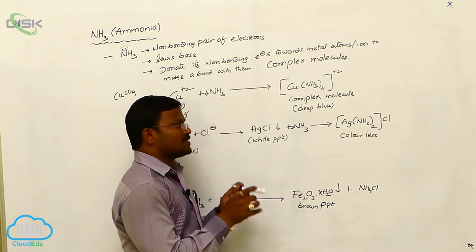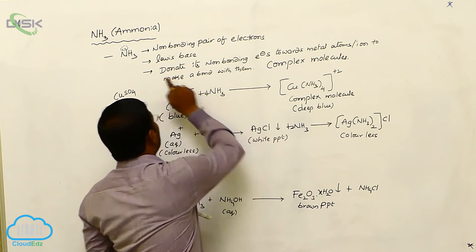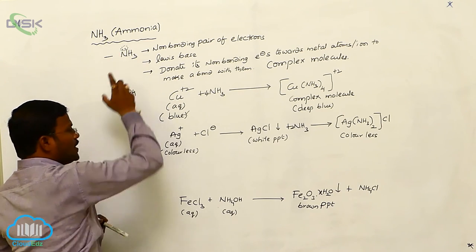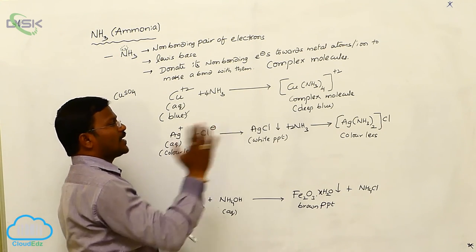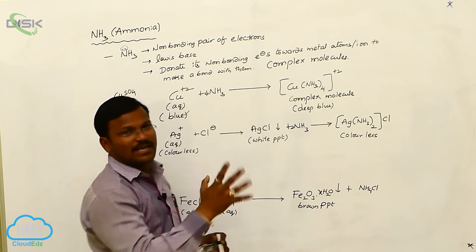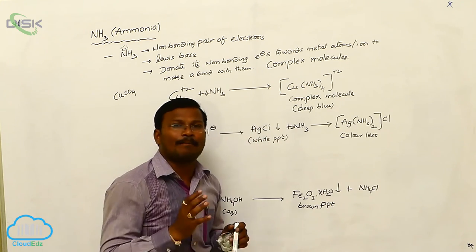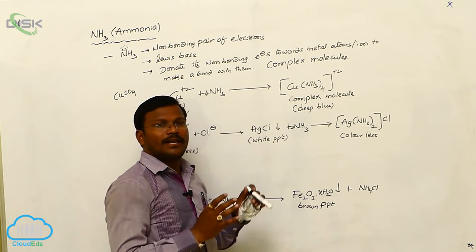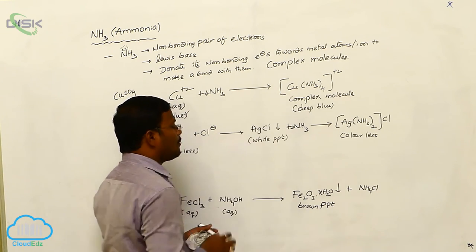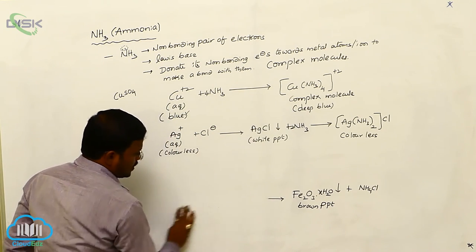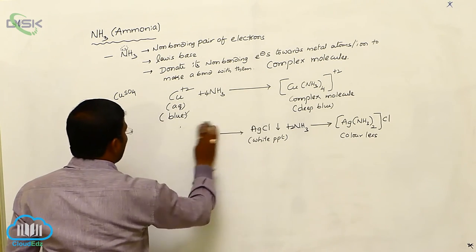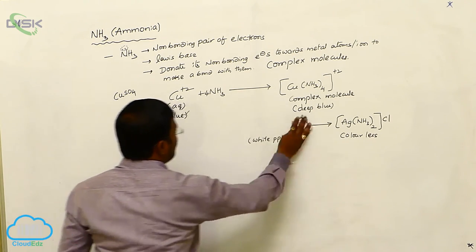These two reactions explain the Lewis base character of ammonia. Due to the presence of non-bonding pair of electrons on the nitrogen of ammonia, it readily donates its electrons towards the empty orbitals of metal atoms or metal ions to form coordination covalent bonds, producing complex molecules. This is a key reactivity and property of ammonia.